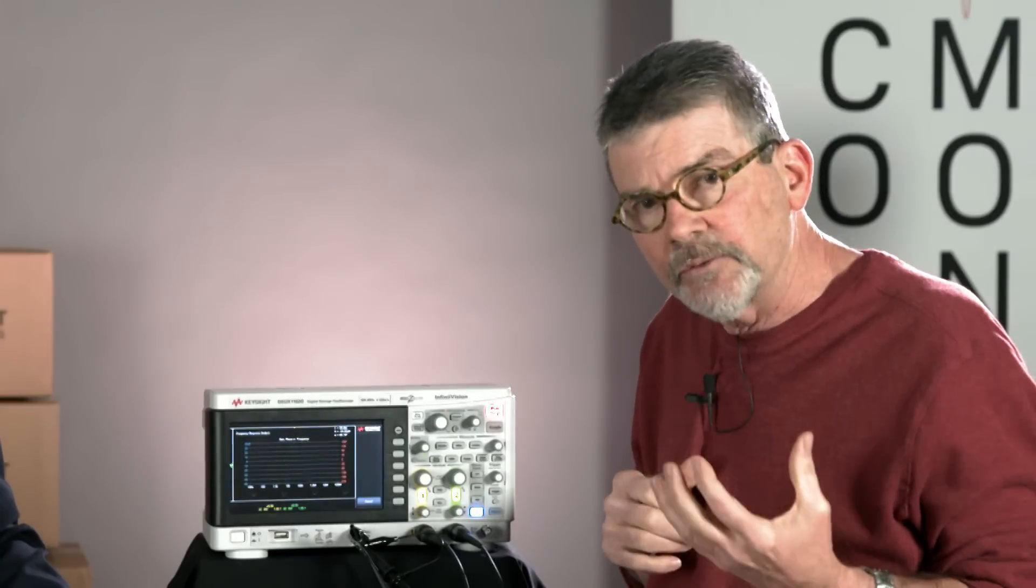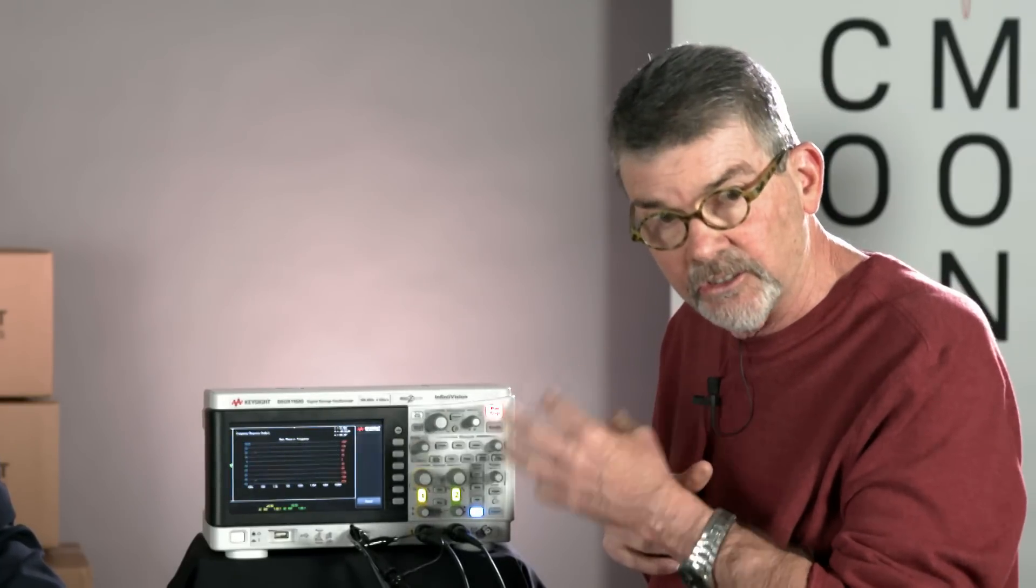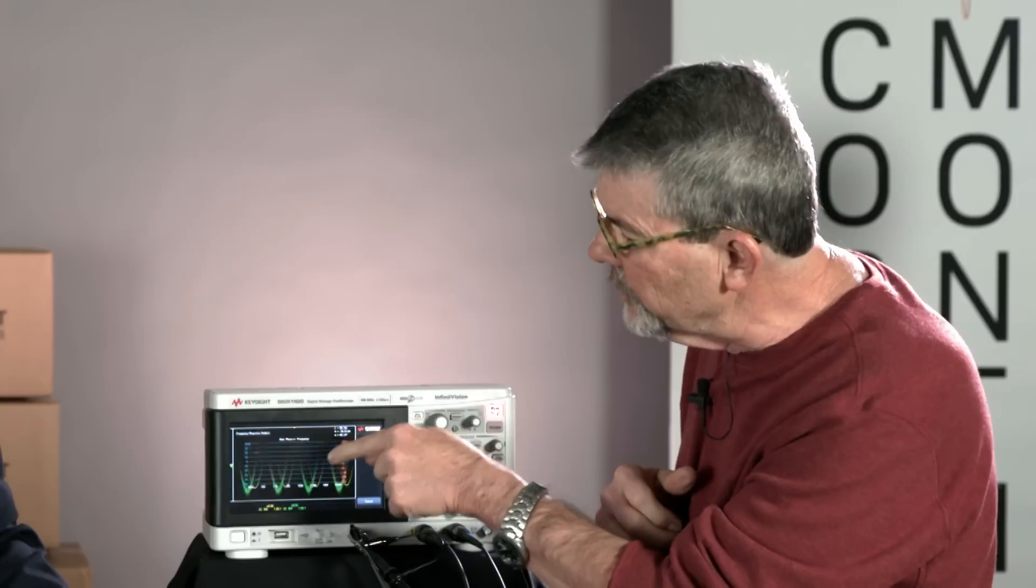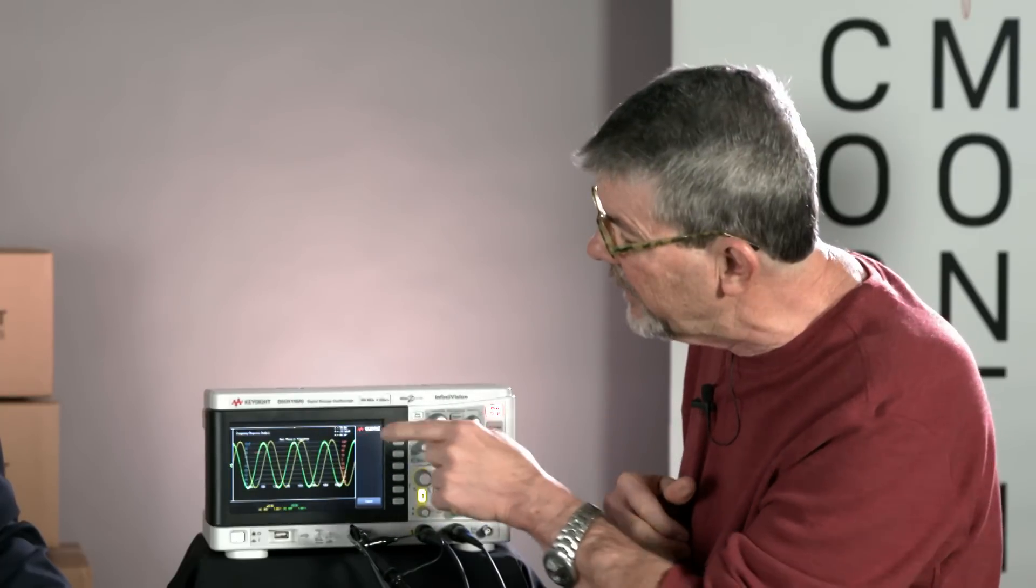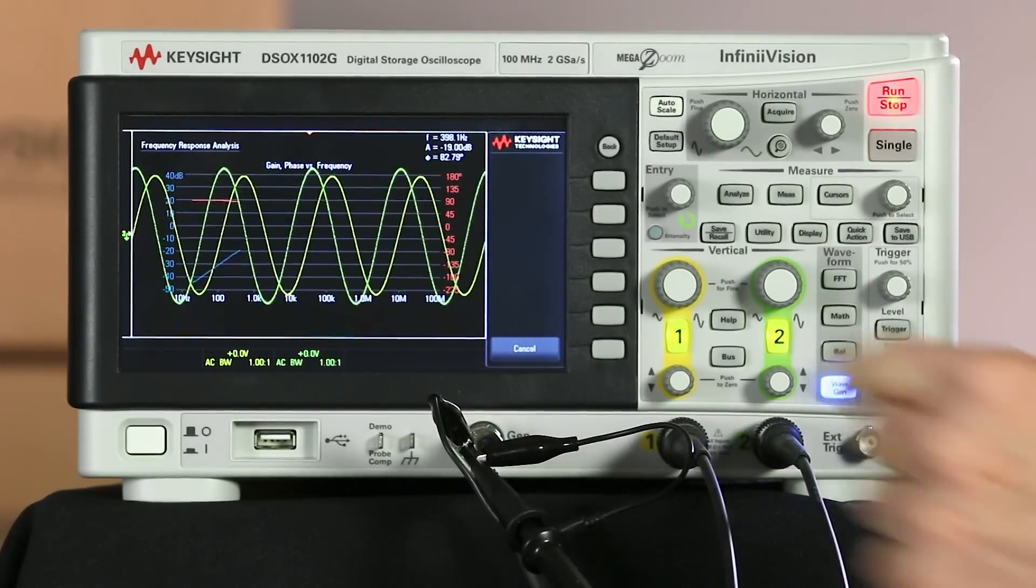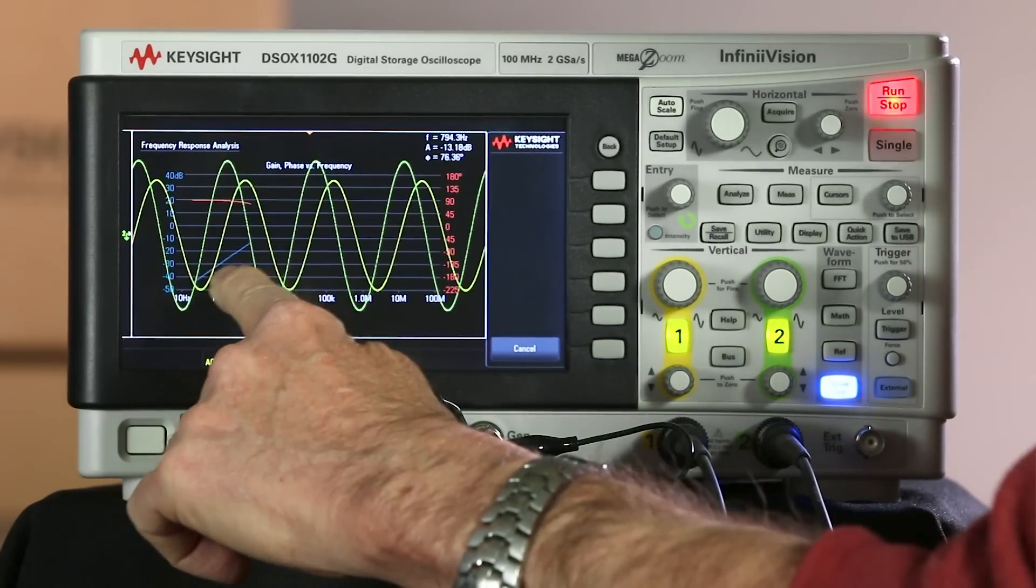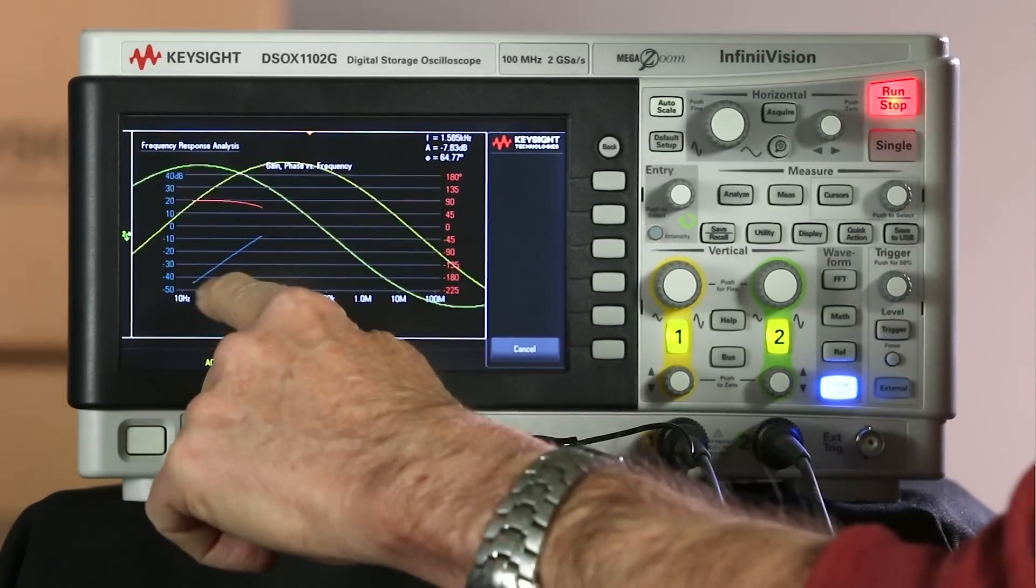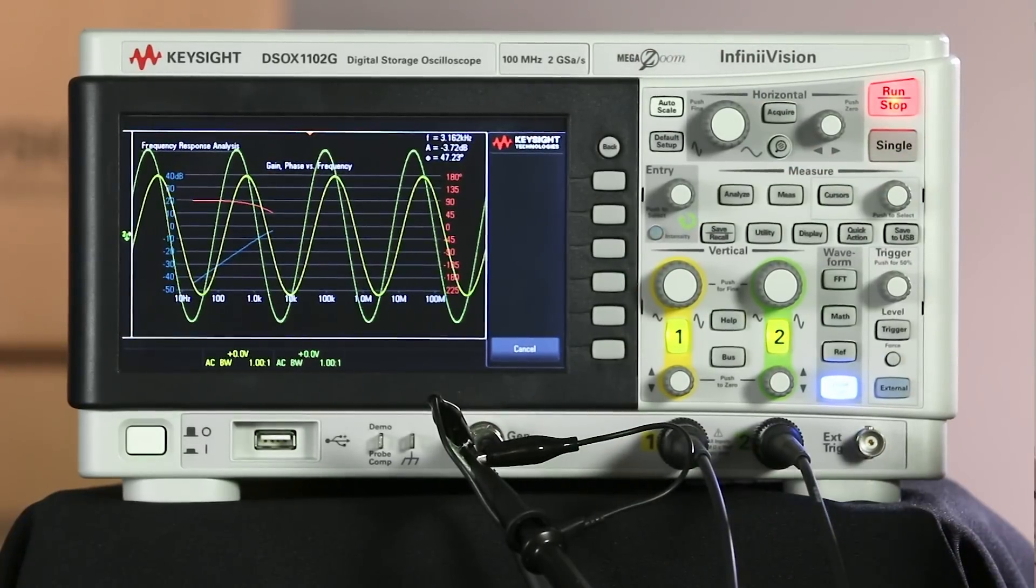Now, one big advantage of the Keysight oscilloscope based solutions is you can see the waveforms during the test. The yellow waveform is V-in. The green waveform is V-out. It started down here. You can see it plotting gain down there close to minus 50 dB.